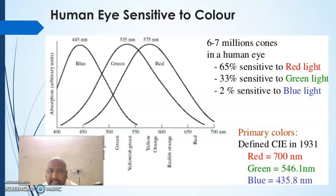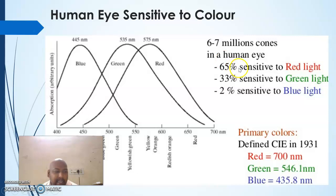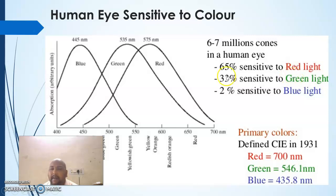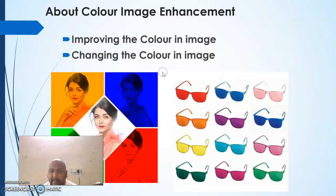The eye identifies the color of an object based on reflection and absorption. In terms of sensitivity, red is the most sensitive, green is around 33 percent as sensitive as red, and blue is only about 2 percent. This is the sensitivity range of the human eye.